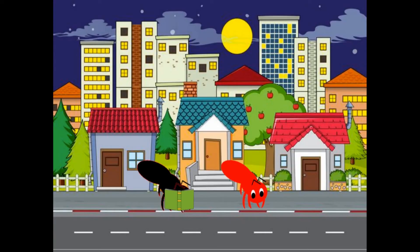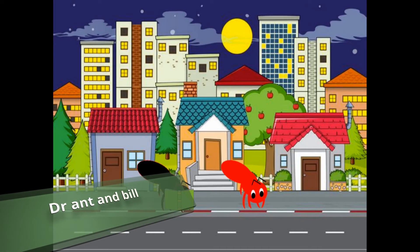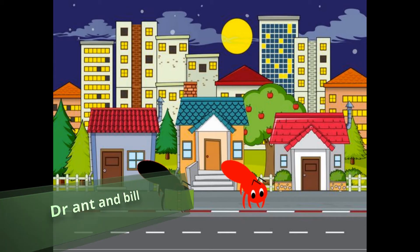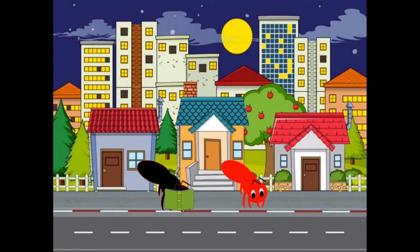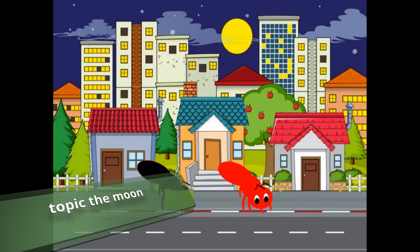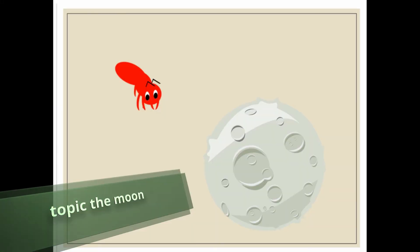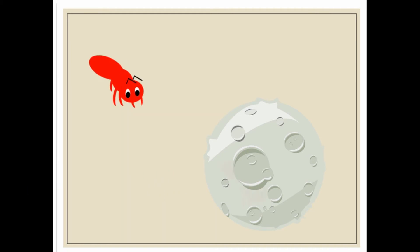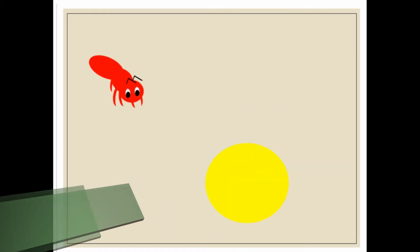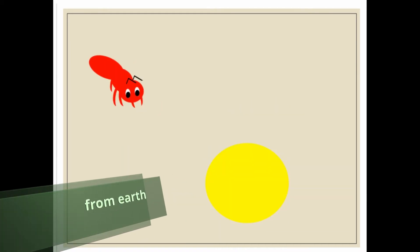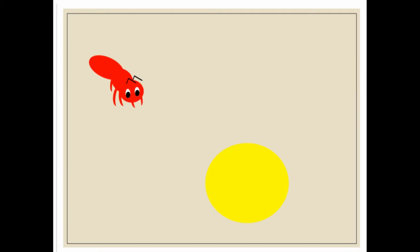Big brother, I cannot understand this — how does the moon not have its own light? Okay, then today I will tell you about the moon. Thank you. So, this is the moon and this is the moon seen from Earth.